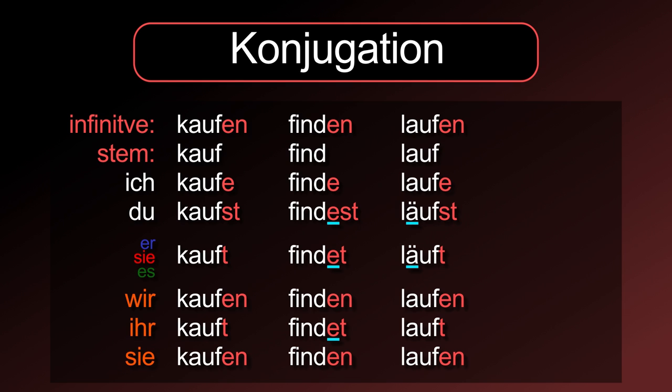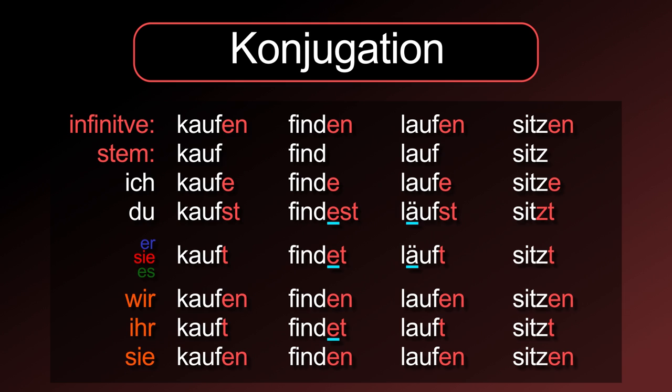If the verb stem ends on s, ß, z, or x, then the -s in the second person singular has to be left out: ich sitze, du sitzt, er/sie/es sitzt, wir sitzen, ihr sitzt, sie sitzen.